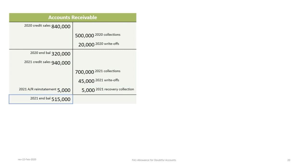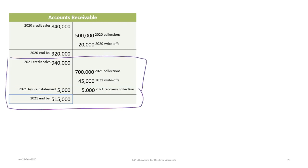For 2021, starting with a beginning balance of $320,000, then adding credit sales, deducting collections, deducting write-offs, and adding the reinstatement, we arrive at an ending accounts receivable balance of $515,000.